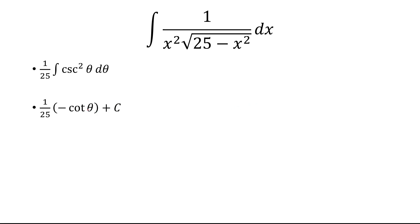And so now we need to figure out what cotangent theta is. So previously we said sine of theta, when we made the substitution, we said x equals 5 sine theta. So sine theta is x over 5.